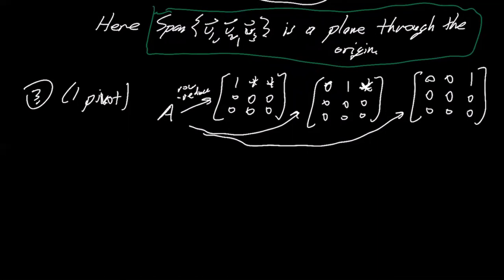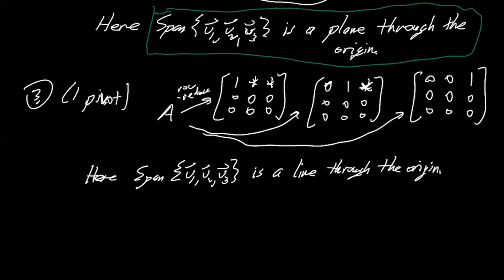You basically can't get off this line. You have one vector. You take all scalar multiples of it and you kind of just get a line through the origin. Right. So here the span, through the origin though, is a line through the origin.